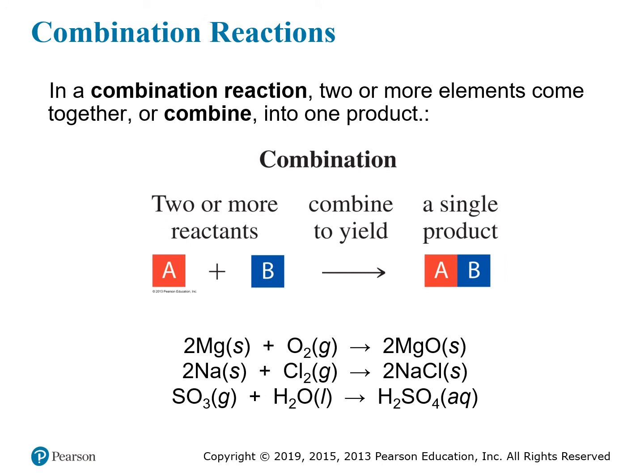The first kind is the combination reaction, also called the formation or synthesis reaction, because it involves the creation of a single product from two or more reactants. Two things react and combine together to produce a single product. For example, you can take magnesium metal and combine it with oxygen from the air, and they'll burn together and create magnesium oxide.